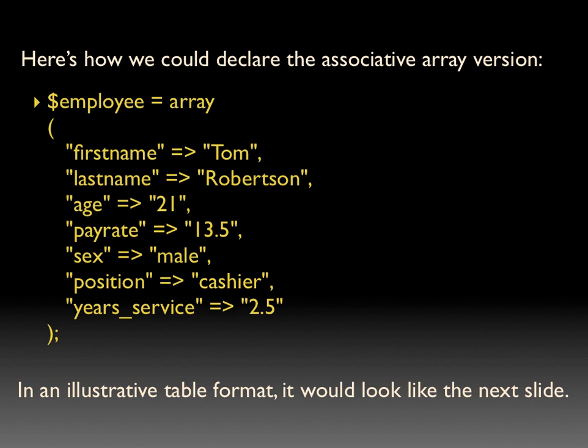You would actually be able to pull up this information and have it print to screen through using different functions, where you could actually have it tell us that the first name is Tom. We can kind of figure some of that out just by looking at it. But for instance, 13.5 — what's that? Well, you could actually use the key of this array to print to screen next to the value of 13.5 so that we'd understand that that's actually a pay rate.